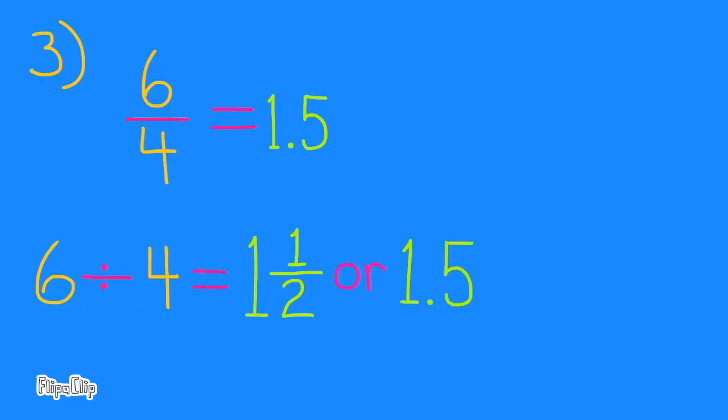Problem number 3. Consider the graphed line. Mai uses triangle A and says the slope of this line is 6 over 4. Elena uses triangle B and says no, the slope of this line is 1.5. Do you agree with either of them? Explain.